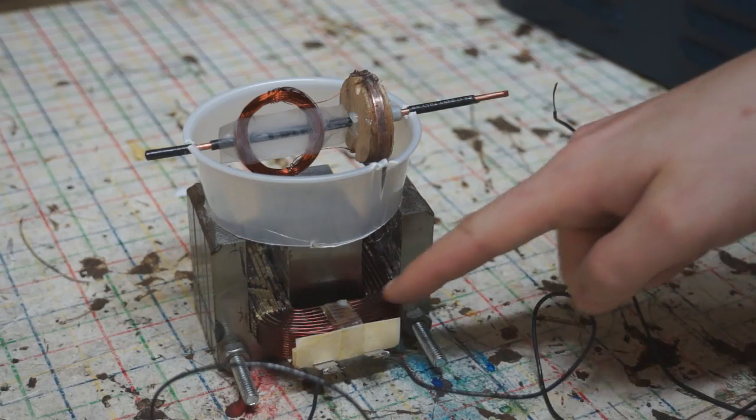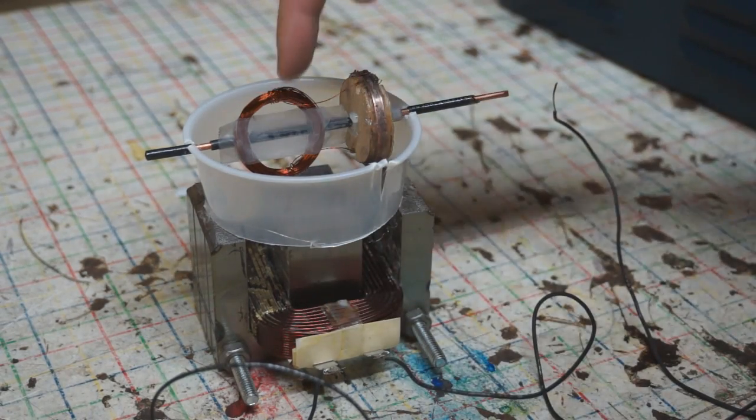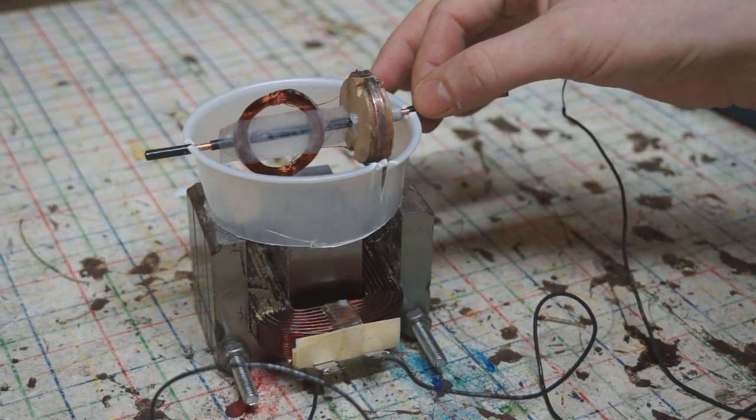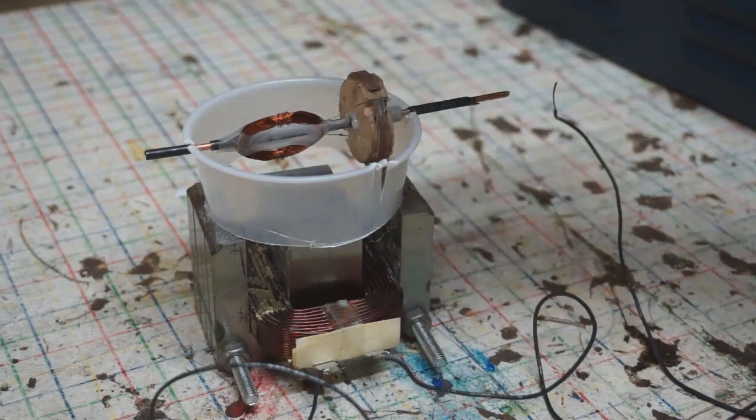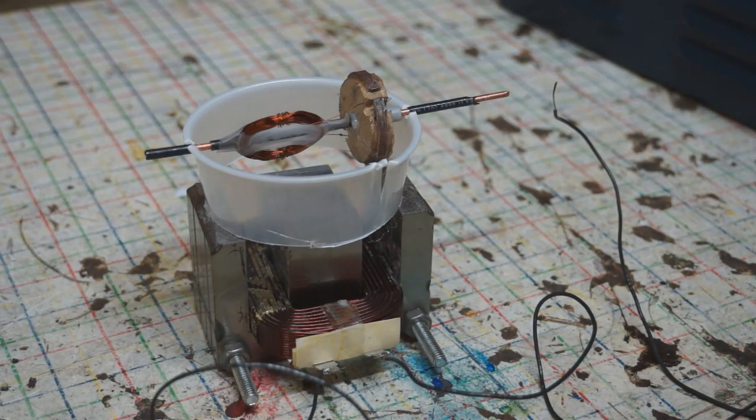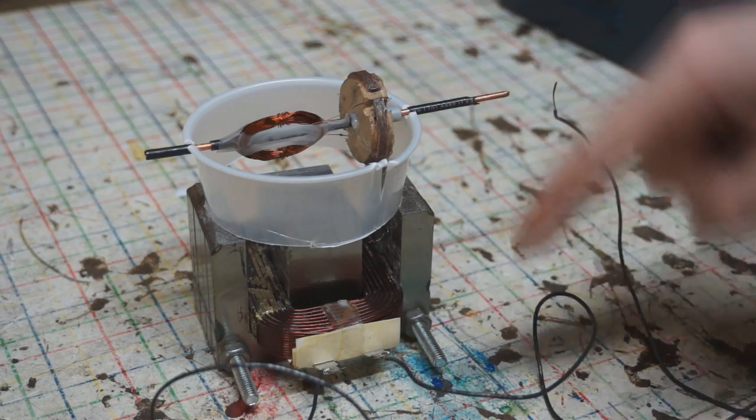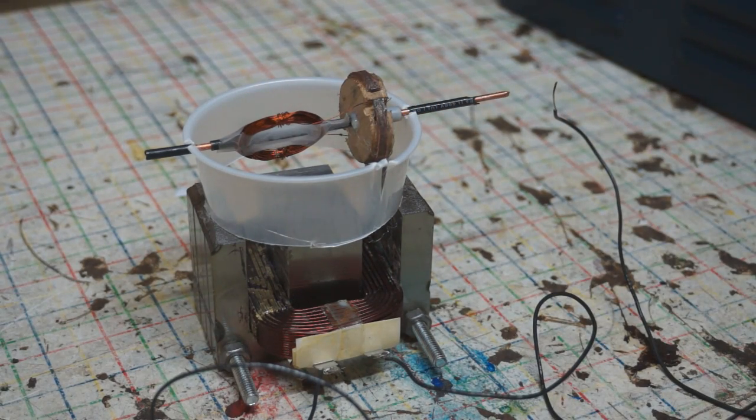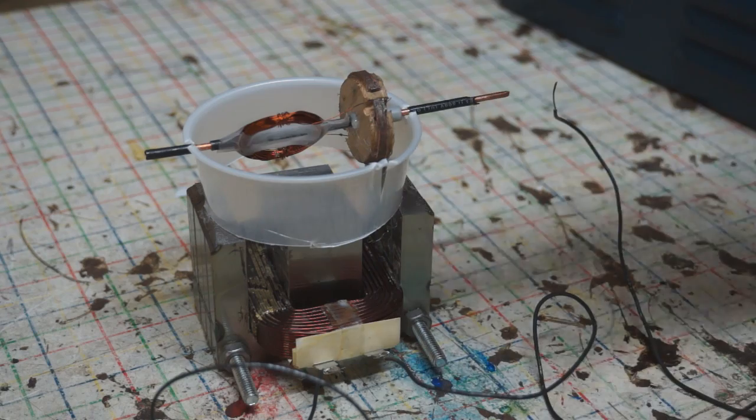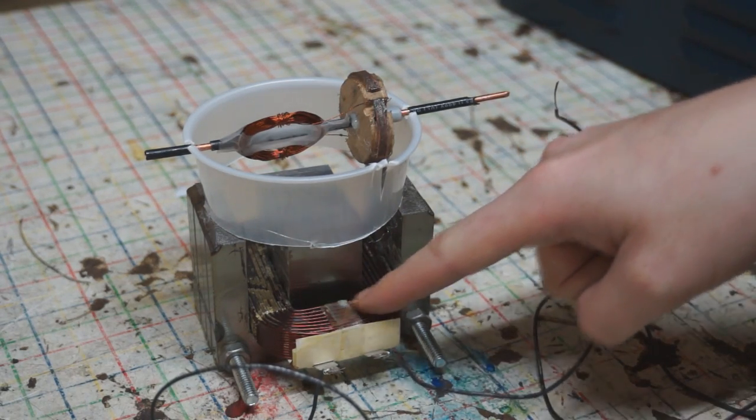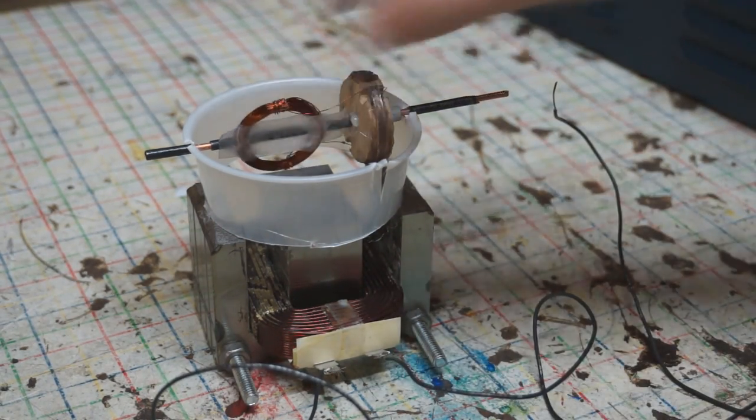What happens is as the current flows through this coil and flows through the rotor, the magnetic fields start to interact with each other just like in the DC version. But every time the current changes direction because it's being powered by AC, it changes direction in both the series coil and in the rotor.